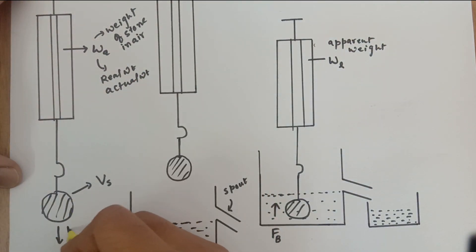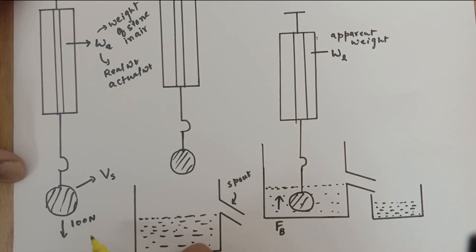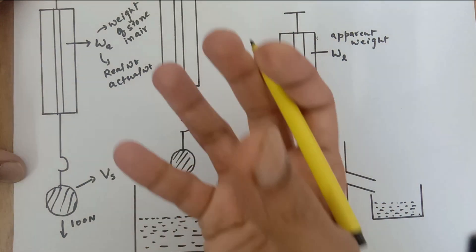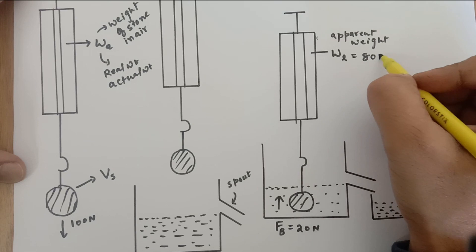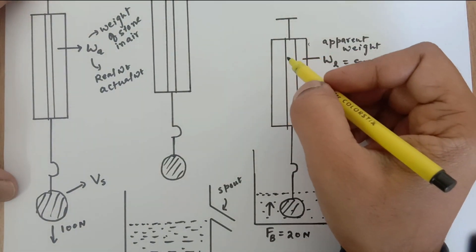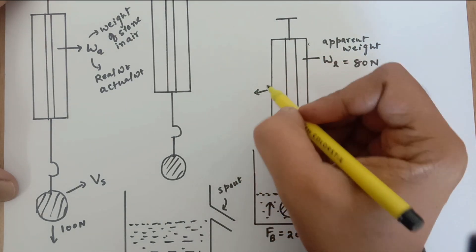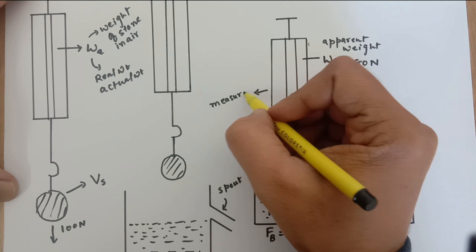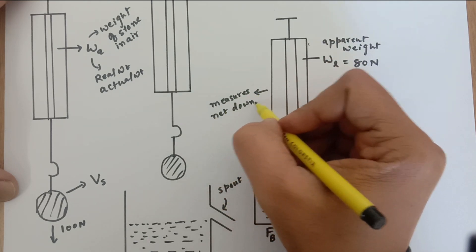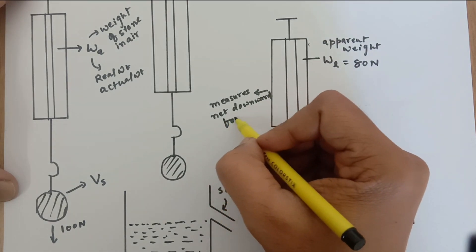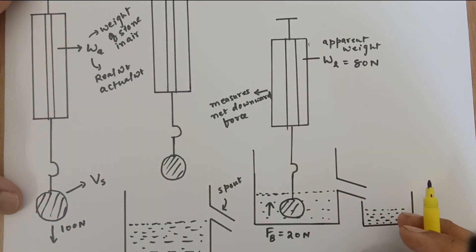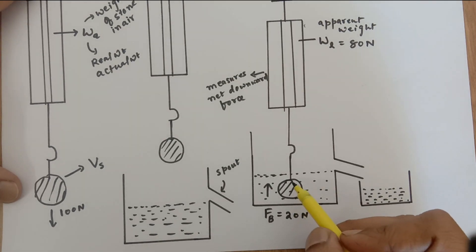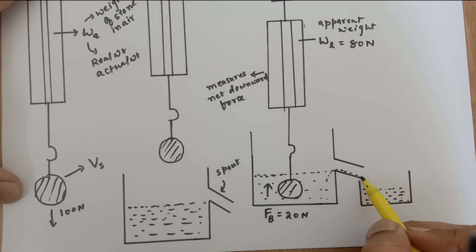For example, the weight in air was 100 Newton, meaning the earth is pulling this body towards itself with a force of 100 Newton. Suppose the upthrust acting on the body is 20 Newton — so 100 Newton downward and 20 Newton upward gives a resultant weight of 80 Newton, which is displayed on the spring balance. Always remember that the spring balance measures the net downward force, so 100 Newton down minus 20 Newton up gives 80 Newton displayed.